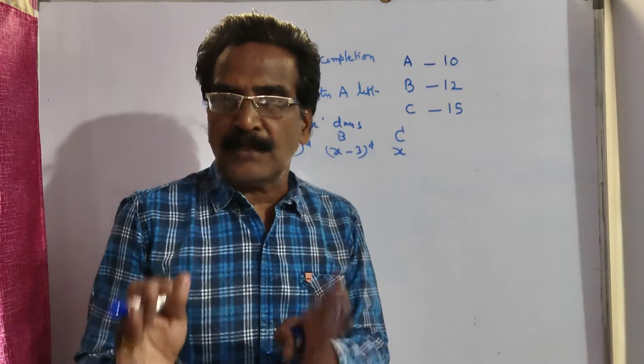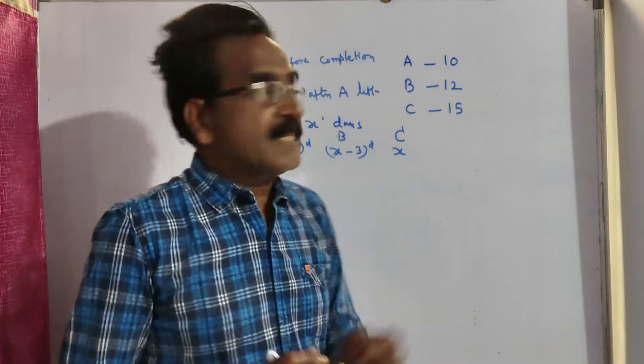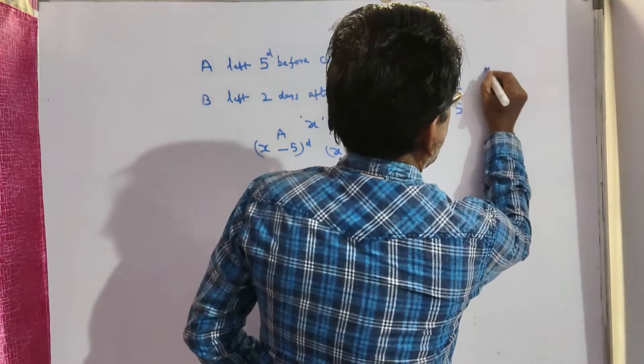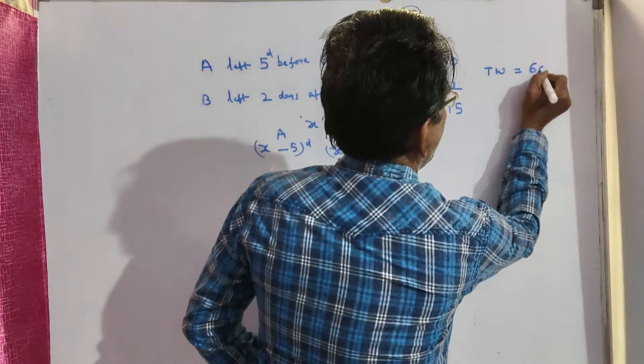Now let us say the total work is the LCM of these 3 numbers, total work say 60 units, total work 60 units.